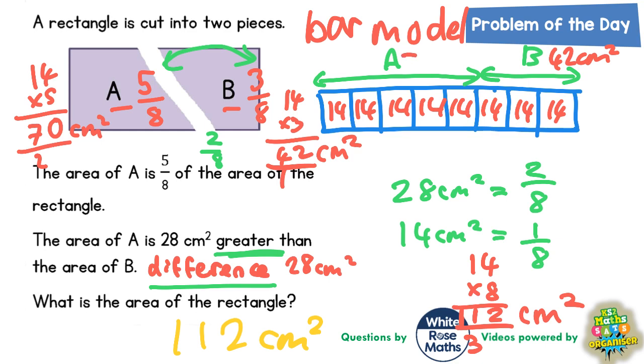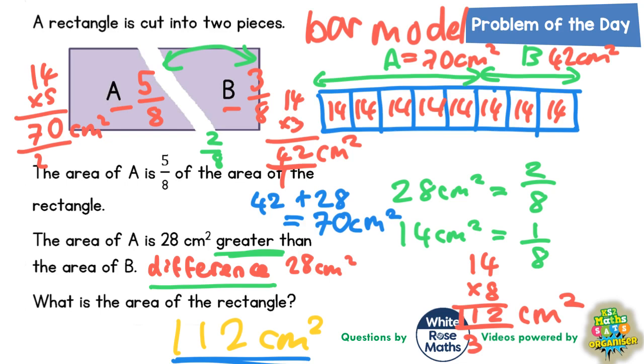So A is 70 centimeters squared. But it does say that the area of A is 28 centimeters squared greater than the area of B. So the question is, is 70 28 greater than 42? Well, if you do 42 add on 28, do you get 70? Well, 40 add 20 is 60, and 2 add 8 is an extra 10 that makes the 60 up to 70. So yeah, that seems to fit in as well. So this seems to all fit in with our answer being 112 centimeters squared.